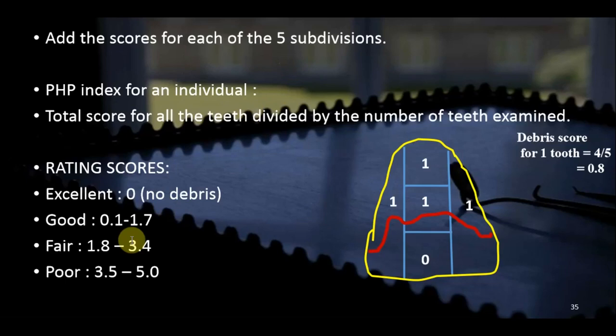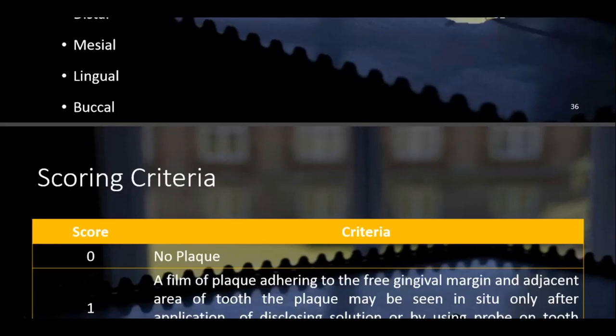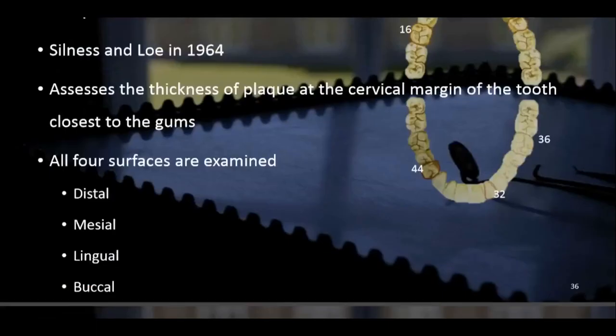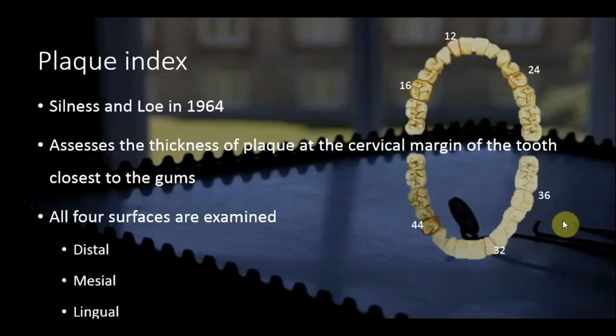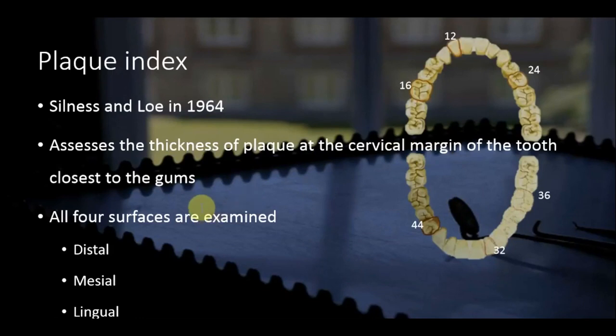Next is the Plaque Index, given by Silness and Löe in 1964, which checks the thickness of plaque at the cervical margin of the tooth. The cervical margin is examined because plaque is mostly concentrated in the cervical region. Four surfaces are checked: distal, mesial, lingual, and buccal.